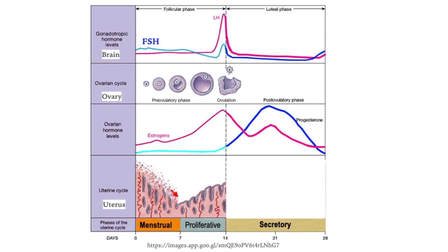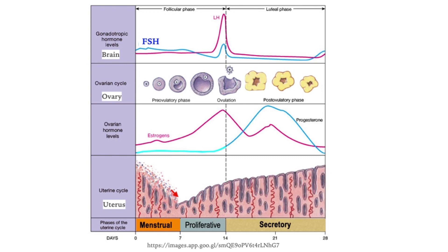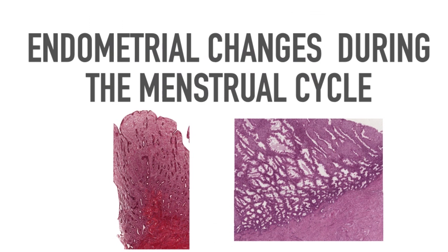The secretory phase follows ovulation, correlated with the secretion of progesterone by the functional corpus luteum — also called the luteal phase. Luteinizing hormone and follicle-stimulating hormone decrease. The ruptured Graafian follicle forms the corpus luteum, which produces increasing levels of progesterone and estrogen, causing the lining of the uterus to further thicken. The endometrium undergoes monthly cyclic changes in thickness and histological appearance in response to fluctuating levels of ovarian hormones.